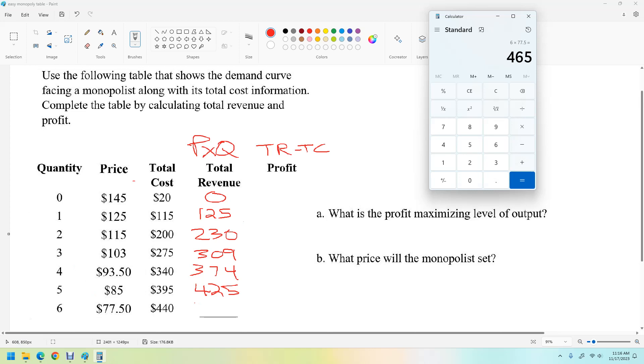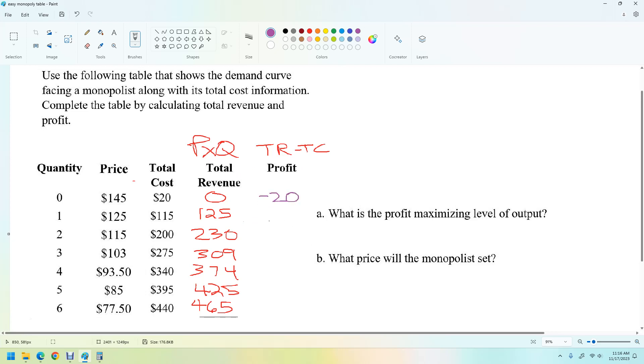OK, so now we've got all of our total revenue, we can then take the difference between these two and that'll give us the profit. So this will be minus 20. This will be 10. This is 30. This is 25 plus 9, 34. This is also 34. This is 30. We're back down to 30 and then this one is 25.